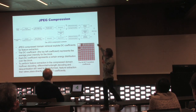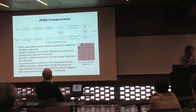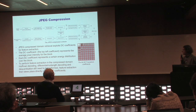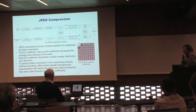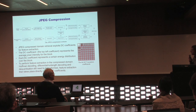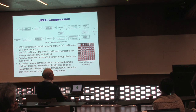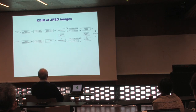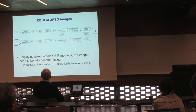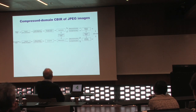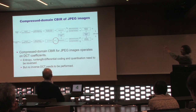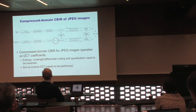Compressed domain retrieval in the JPEG domain is typically based on DCT coefficients. The idea is to avoid performing the inverse DCT, which is the most expensive operation, and instead extract features directly from the DC and AC coefficients. Performing retrieval in the pixel domain requires undoing all compression stages to arrive at the uncompressed image; compressed domain retrieval based on DCT data intercepts the data partway through the pipeline and uses that for feature extraction.